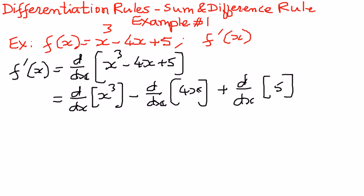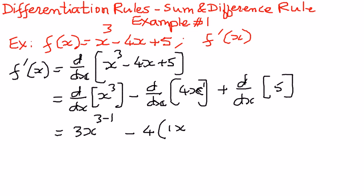So we know that d by dx of x to the power of 3 — here n is equal to 3 — we can use the power rule, therefore we can differentiate it with respect to x as 3x to the power of 3 minus 1. Then the next one is minus the derivative of 4x with respect to x: 4 is a constant, so we pull it out, and x means x to the power of 1, so therefore 1x to the power of 1 minus 1. Plus the differential of a constant is equal to 0, so we put that as 0.